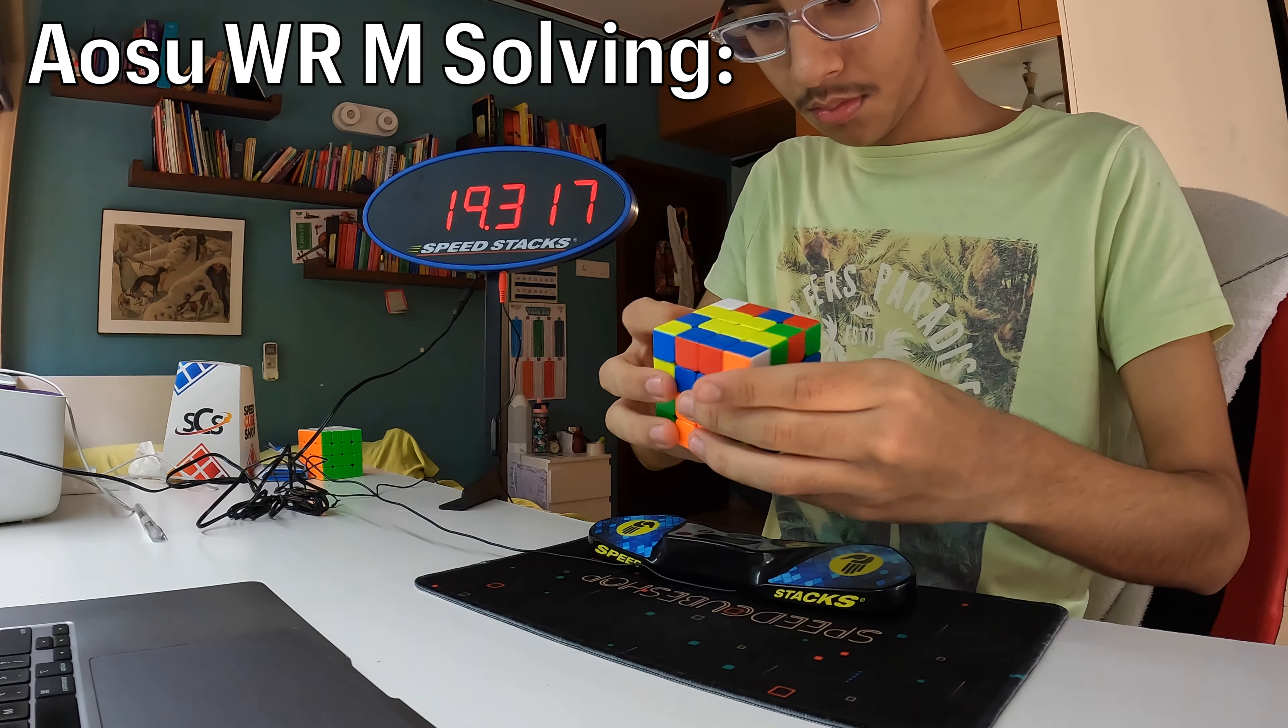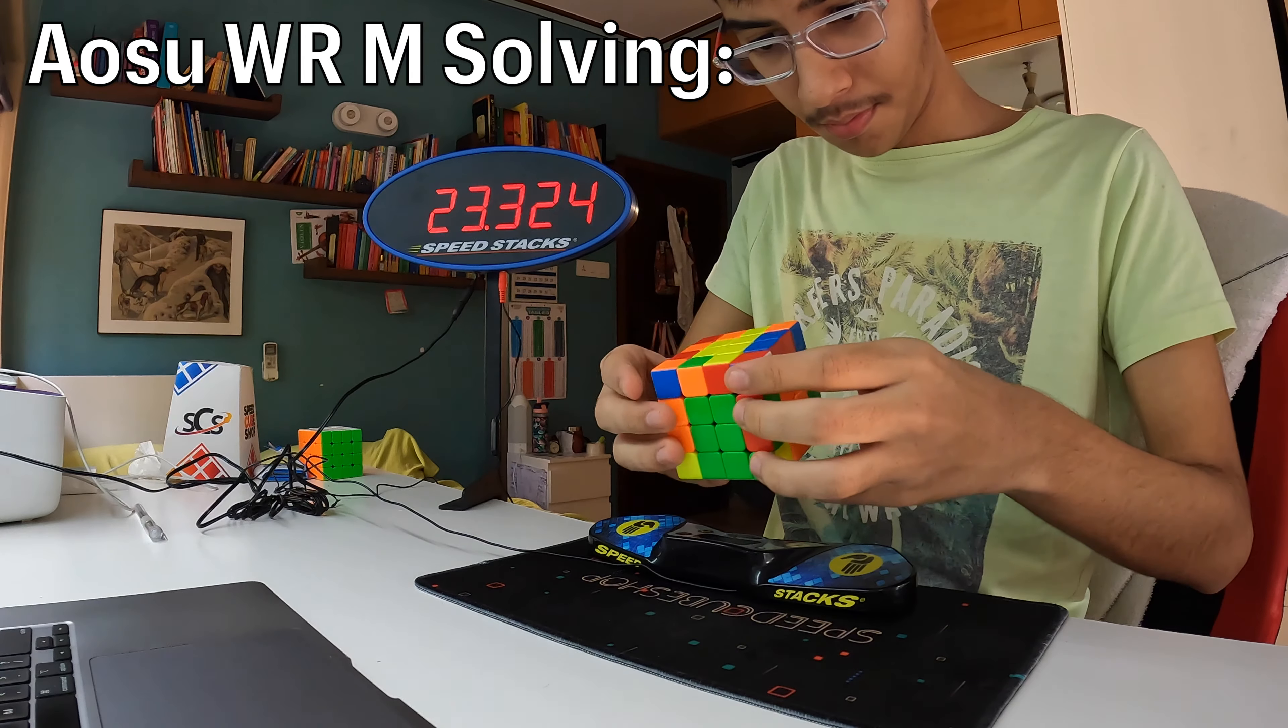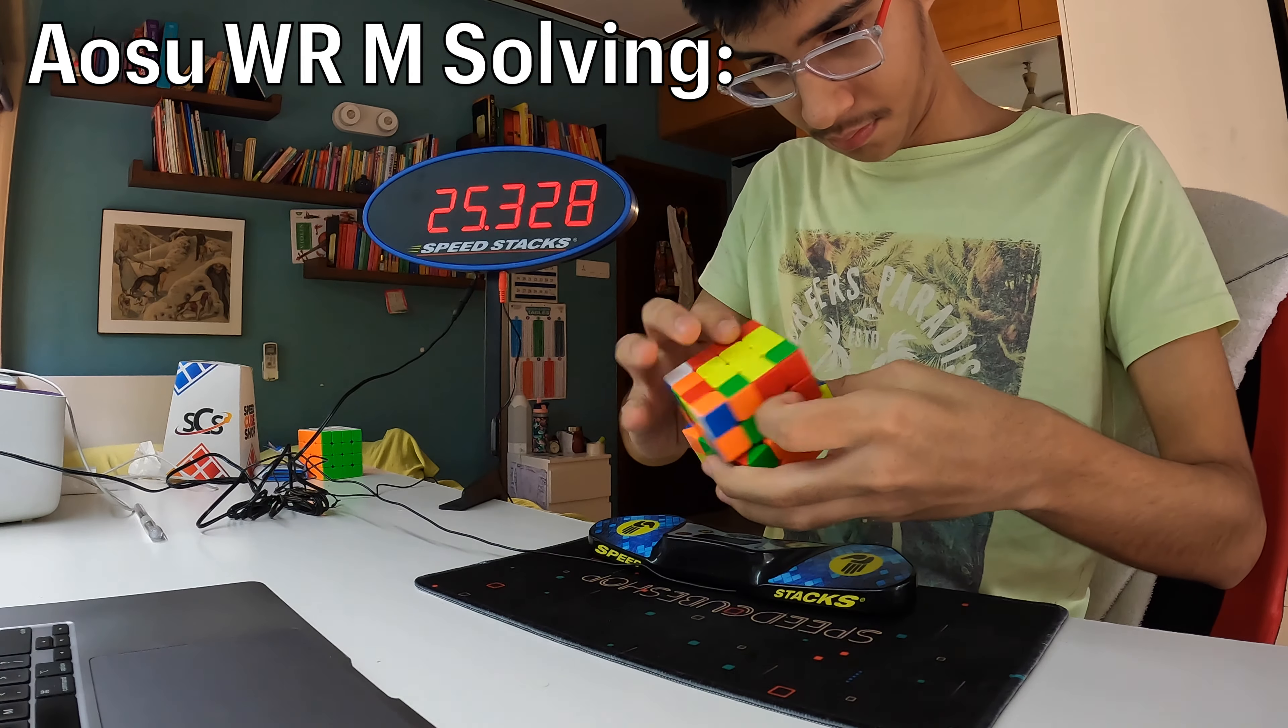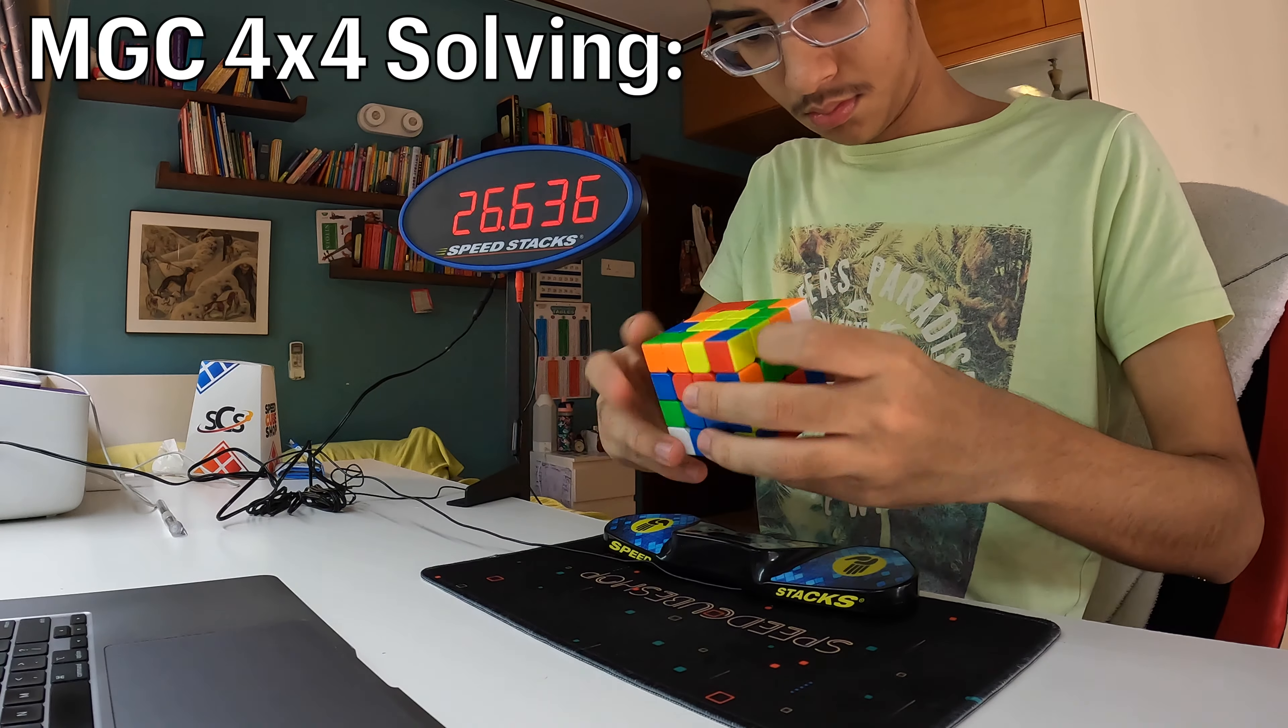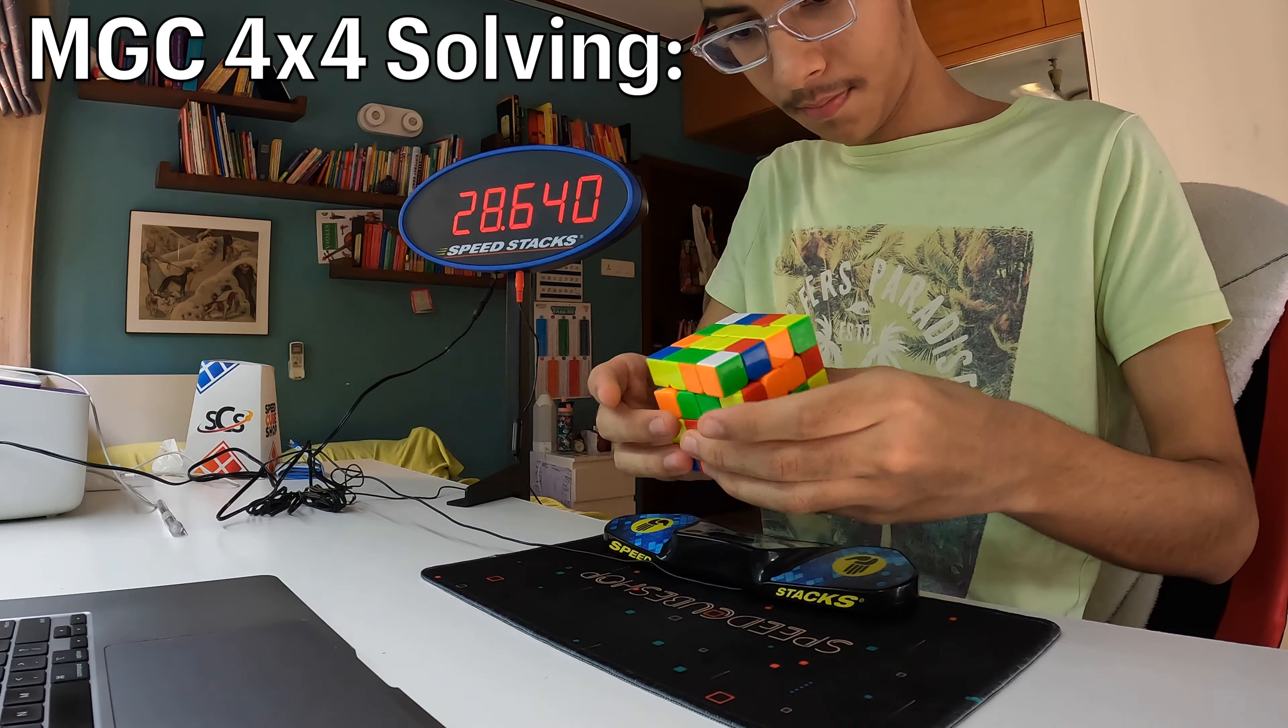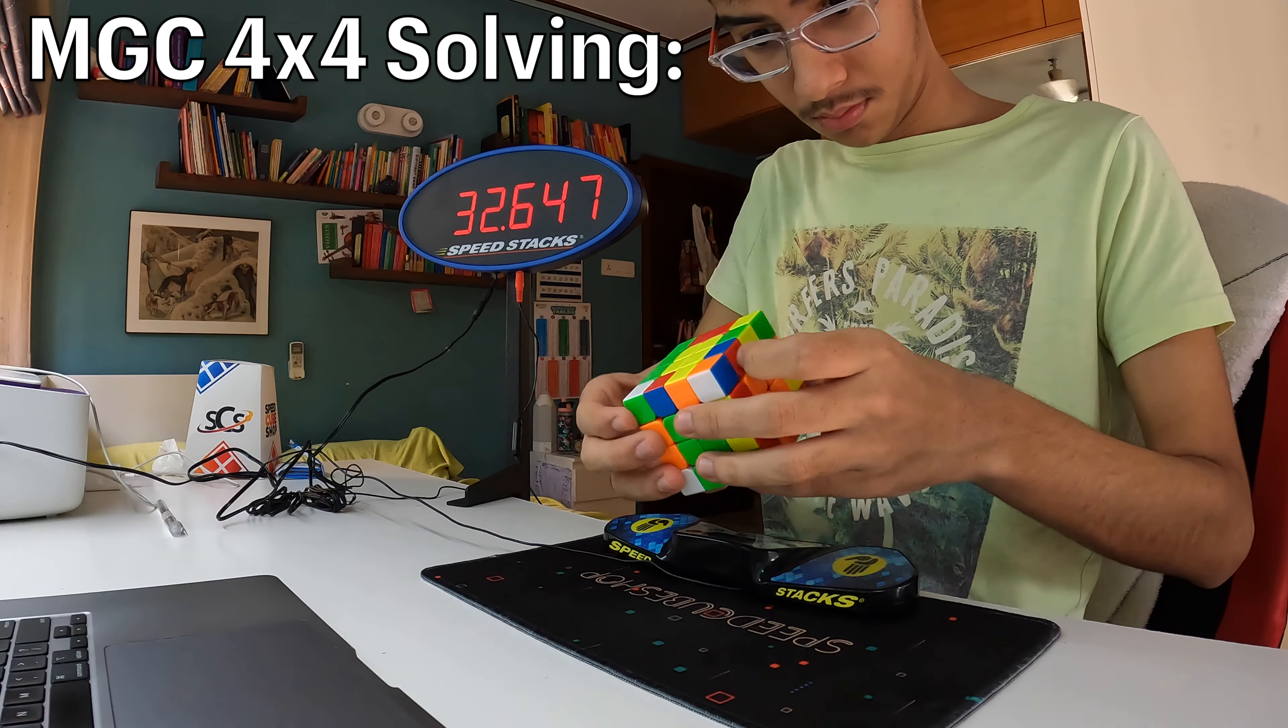However, I know that people are not able to spend this much on a 4x4 and I totally respect that. So for the much better price of $19.95 less if you use code RAM or JPERM, there is the MGC 4x4. I think that value aside, this puzzle is only a little bit worse for me in terms of performance and ultimately, hardware is so good nowadays that it does come down to personal preference.